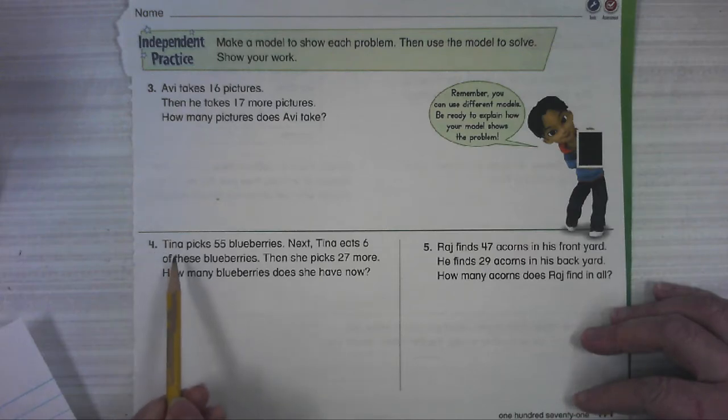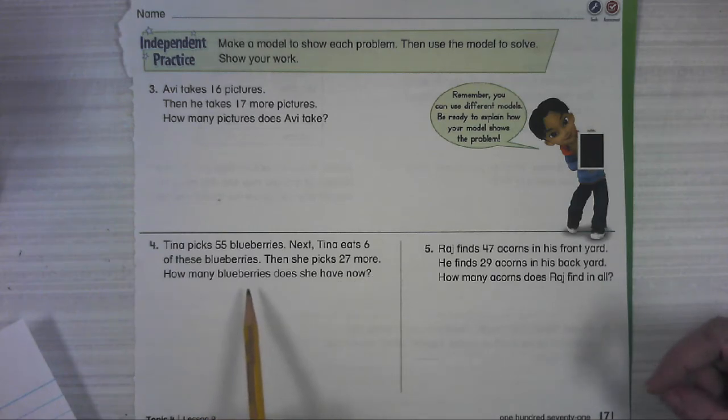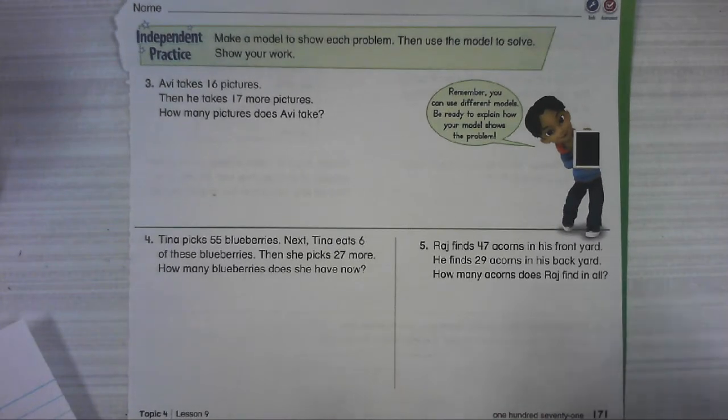Number 4, Tina picks 55 blueberries. Next, Tina eats 6 of these blueberries. Then she picks 27 more. How many blueberries does she have now? Just pause it and come back when you're ready for me to read the next one.